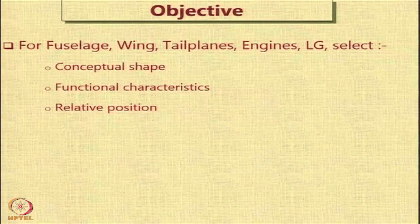Let us have a look at what are the various choices available to a designer while deciding the aircraft layout. The word aircraft layout in aircraft design basically means the relative location of various components as well as the nature, shape, and size of these components. Assuming the aircraft has major components like the fuselage, wings, tail planes, engines, landing gear, etc., the main task of the designer is to look at the conceptual shape, functional characteristics, and relative position of these components with respect to each other.